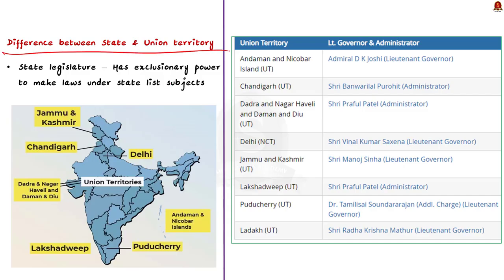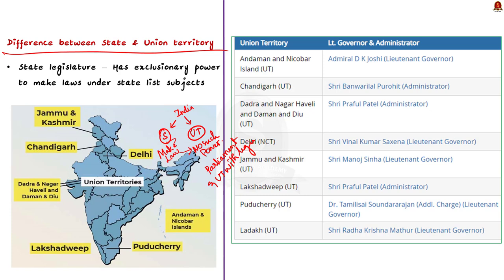The term 'Union of India' can be divided into two categories: states and union territories. The main difference is that state governments have the exclusionary power to make laws regarding subjects listed under the State List of the Seventh Schedule. This power is not extended to union territories. Both the Union Parliament and union territories with a legislative assembly have concurrent powers of law-making in State List subjects.